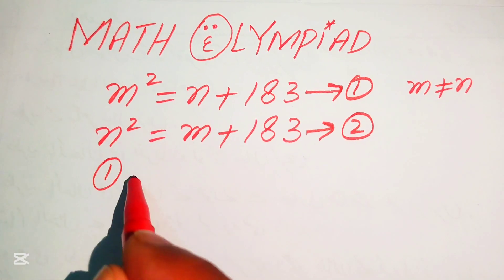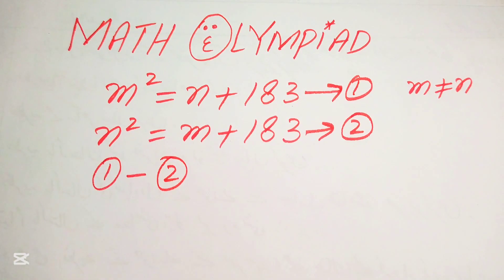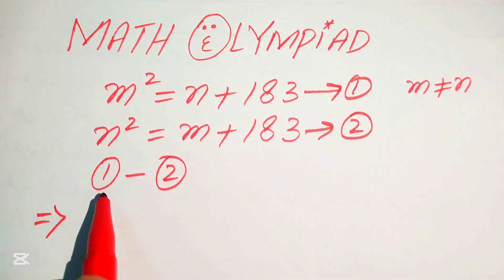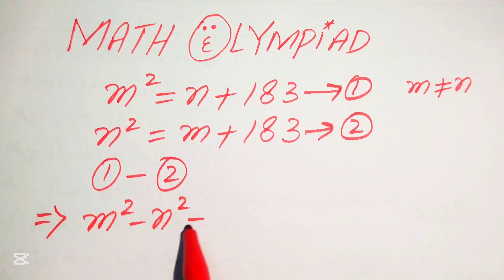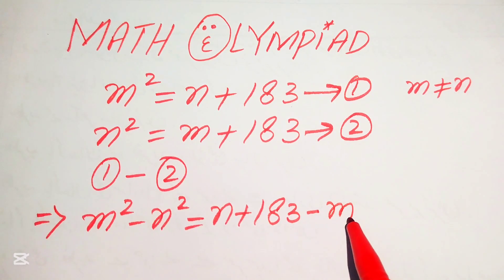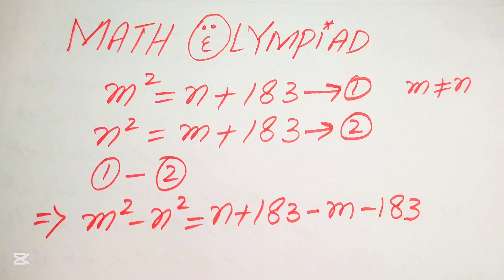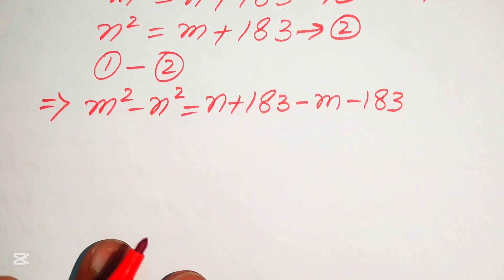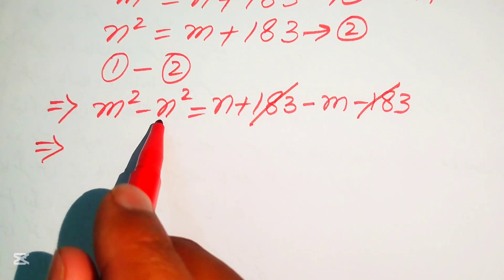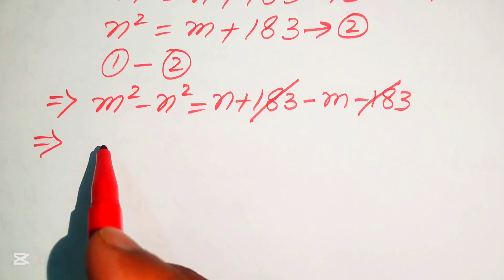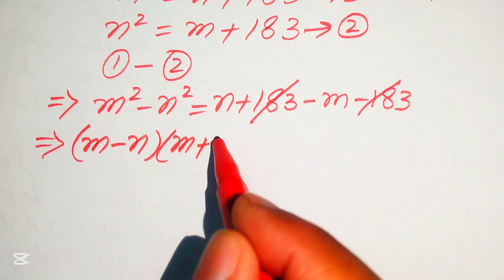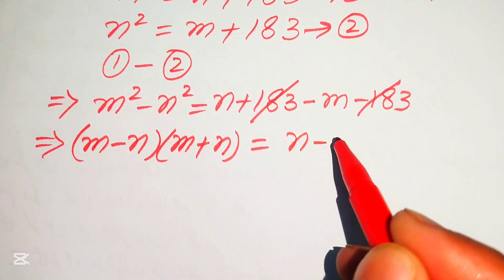In the first step we subtract equation number 2 from equation number 1. So we write m squared minus n squared on the left hand side, and on the right hand side we have n plus 183 minus m minus 183. The 183 terms cancel, and on the left hand side we apply the algebraic formula: m squared minus n squared equals m minus n times m plus n. On the right hand side we have n minus m.